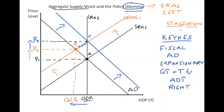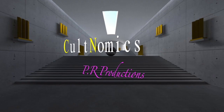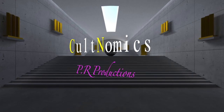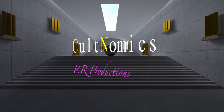This is the classic dilemma that ensues following a negative aggregate supply side shock and using fiscal policy to overcome it. I hope you come back to Cultnomics soon — bye for now.